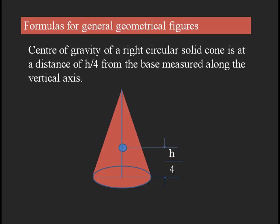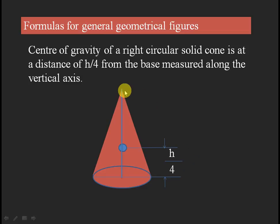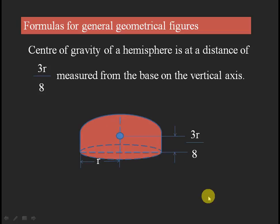For a circular cylindrical cone with total height h, the center of gravity from the base is at a distance of h/4. That is, on the vertical axis from the base to the apex point, the center of gravity is located at h/4.